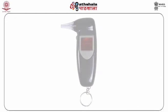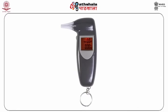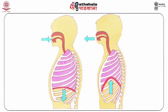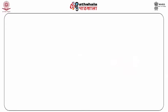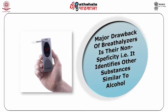Common sources of error: Breath testers are temperature sensitive and may give false readings if not recalibrated or adjusted to account for the surrounding ambient temperature. The subject's body temperature is also important. The pattern of breathing can also significantly affect the results of a breath test. The following are the common sources of error in different breath alcohol testing devices. First, non-specific analysis.